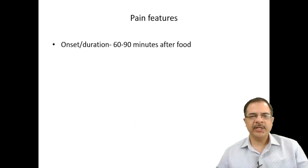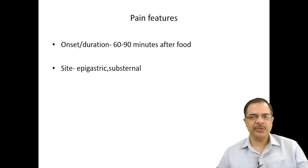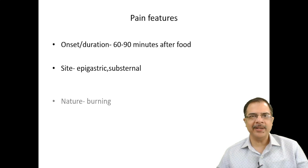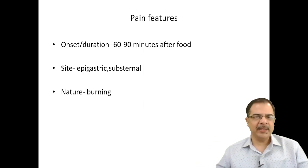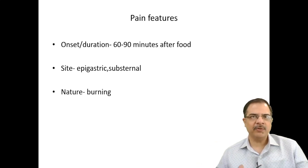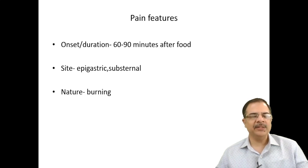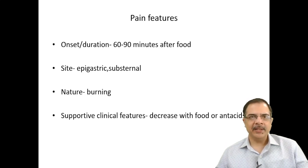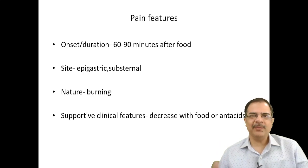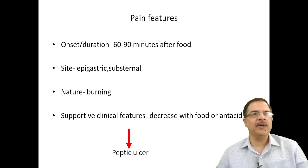Onset 60 to 90 minutes after food, primary location epigastric, can radiate to the substernal area, burning in nature due to acid — a gastrointestinal pain. This pain decreases with food intake and antacids, so this is a case of peptic ulcer pain.